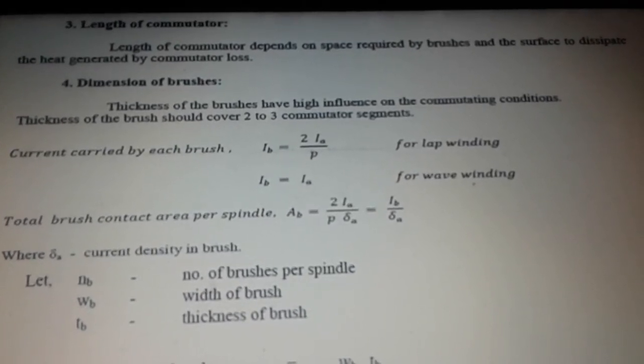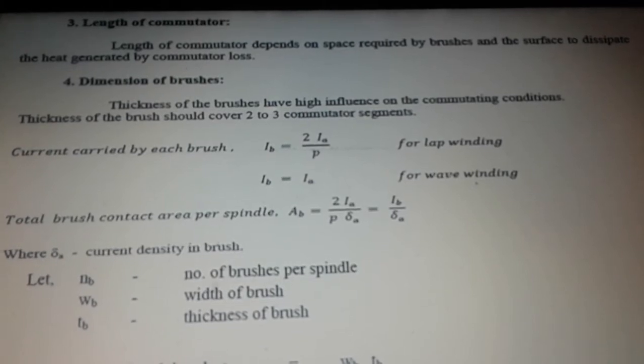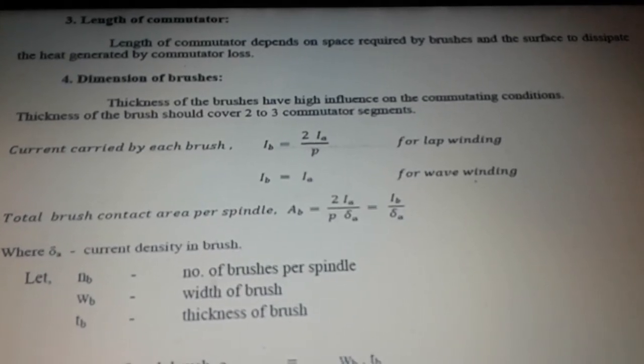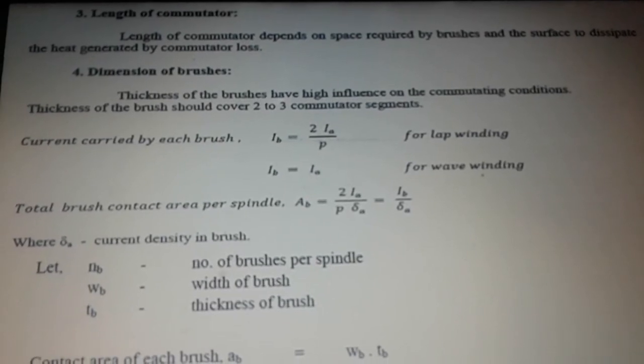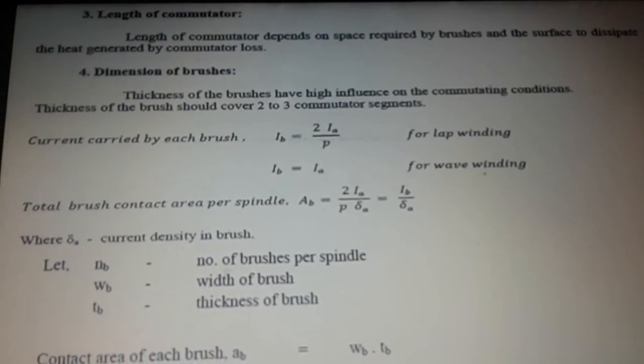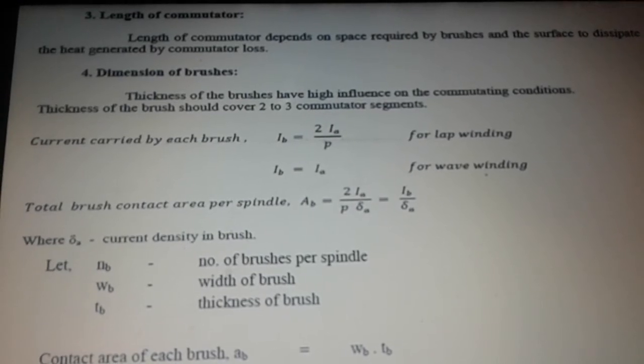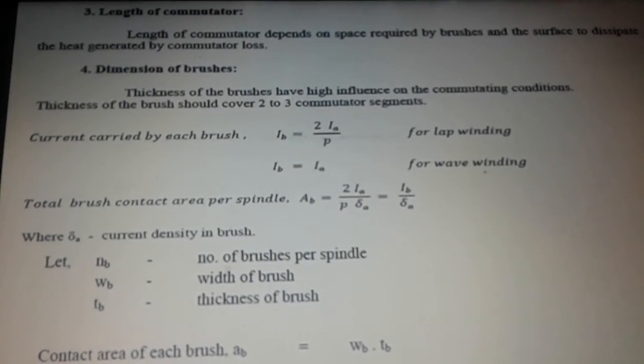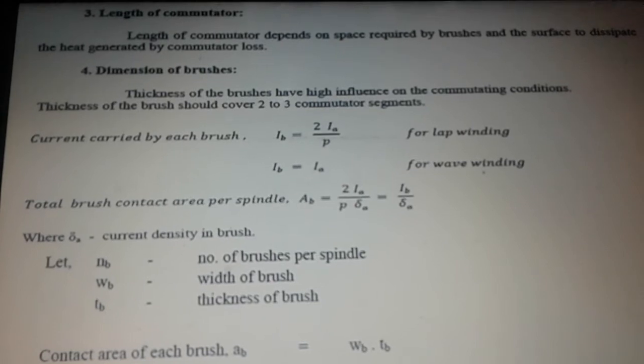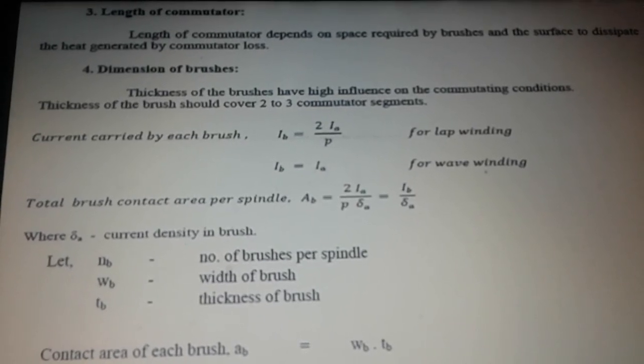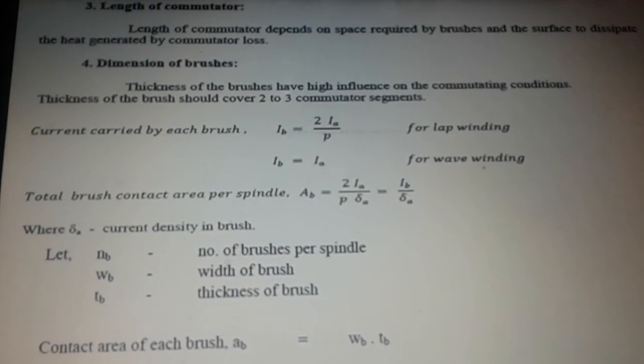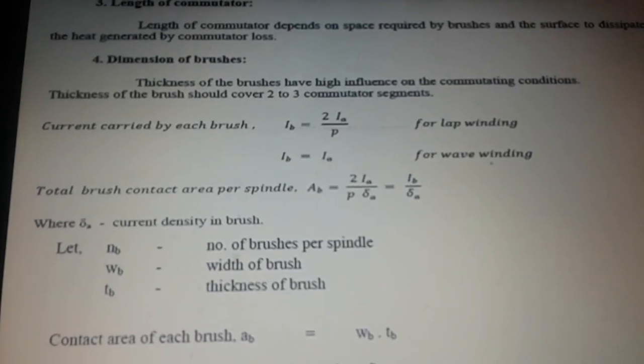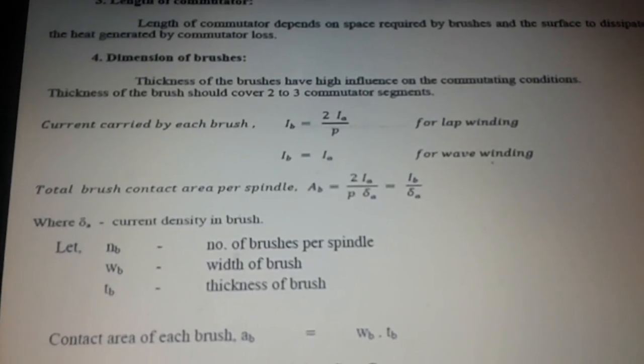Current carried by each brush is 2IA divided by P for lap winding, and for wave winding IB equals IA. The total brush contact area per spindle is 2IA by P delta A, which is IB divided by delta, where delta is the current density in the brush.